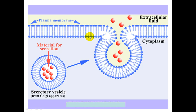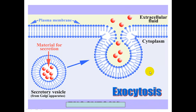I'm going to show you a picture for you to identify. Here is your phospholipid bilayer — outside the cell and inside the cell. Here we have a vesicle that came from the Golgi body, and these little pink things are materials that want to be secreted. This vesicle moves to the plasma membrane, fuses with it, and all the pink substances leave the cell. That is exocytosis.